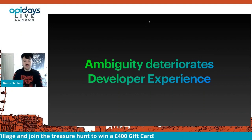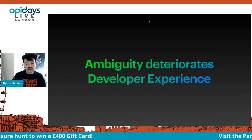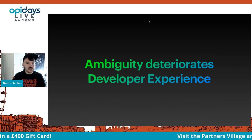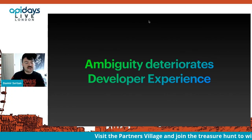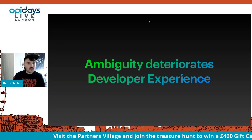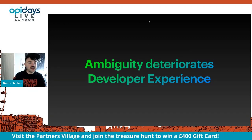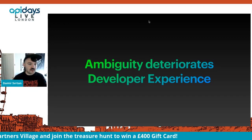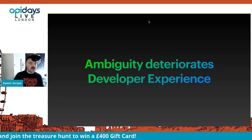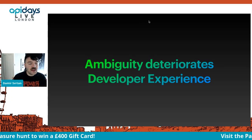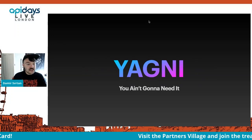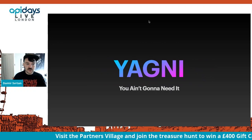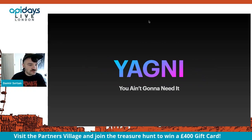In general, ambiguity deteriorates developer experience. Clients might be confused and ask themselves: what happens if I send the same value? What happens if I send a different value? That might kick off other conversations, wasting everyone's time. And lastly, YAGNI — you ain't gonna need it. Don't build it. If you do need it in the future, it's an easy additive change. Don't worry about it.